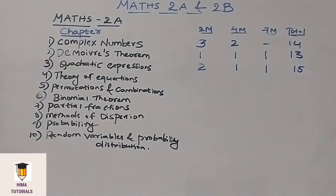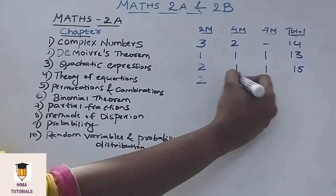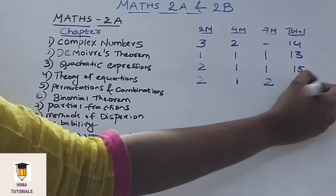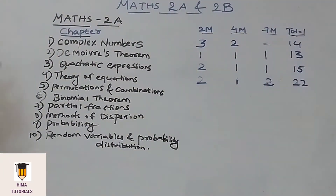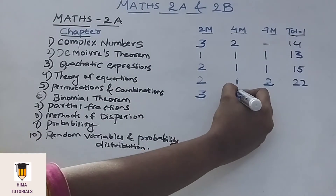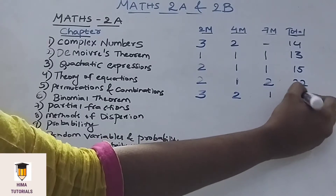Coming to the next chapter, Theory of Equations — this chapter has more weightage. In this chapter, we get 2 two-mark questions, 1 four-mark, and 2 seven-mark questions. Coming to the next chapter, Permutations and Combinations. In this chapter, we get 3 two-mark questions, 2 four-mark, and 1 seven-mark question. This chapter also has high weightage.